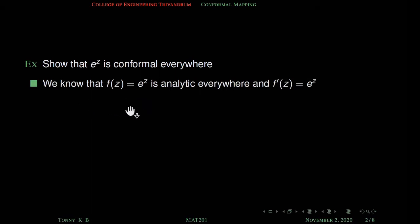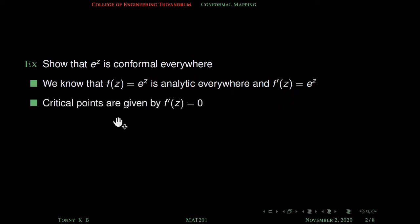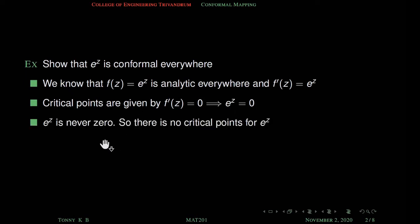We know that e raised to z is analytic everywhere because it is differentiable everywhere, and f' is equal to e raised to z. The critical points are given by the equation f' equal to zero, that means e raised to z equal to zero. We know that e raised to z is never zero, which means e raised to z has no critical points.